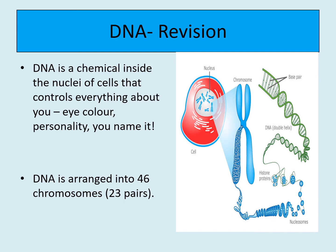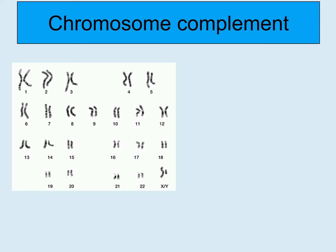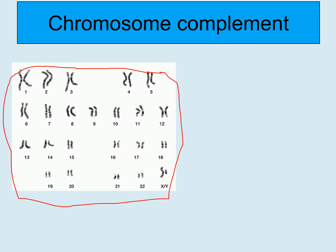DNA is wrapped in things called chromosomes. Chromosomes are thread-like structures found inside the nucleus of cells. Each chromosome carries hundreds of genes and each gene encodes for proteins that are necessary for the development of the cell and the survival of the living organism. We learned about chromosome complement in cell division. The number of chromosomes in a cell is called the chromosome complement — in humans this is 46. We also learned that sex cells, also known as gametes, have half the number of chromosomes, so only 23 chromosomes.